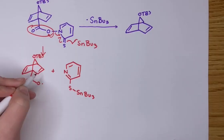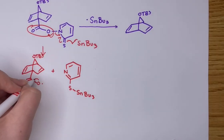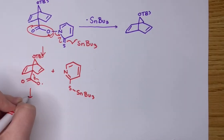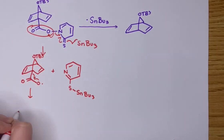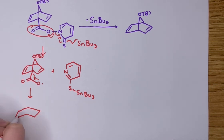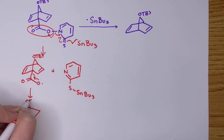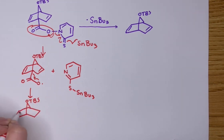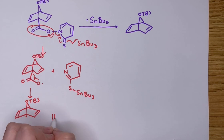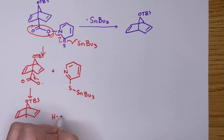Our carbon dioxide will leave and we will end up with our substituent radical, which can later be combined with the tributyltin hydride.